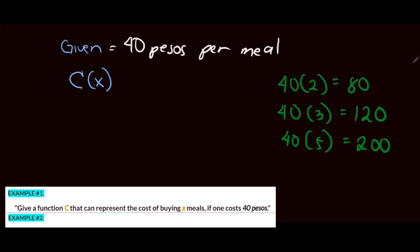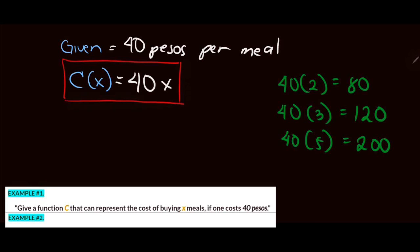Therefore, if we have C of X representing this situation, that means we multiply 40 pesos by X. So our answer is C of X equals 40X. If you want to double-check your answer, let's apply some checking.